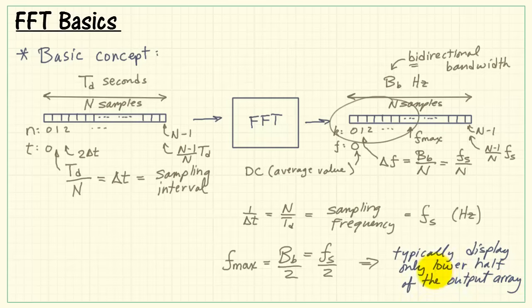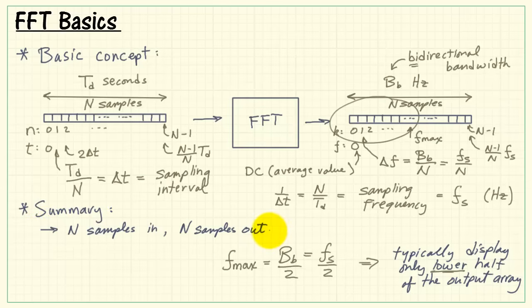All right, let's summarize some of the main points. First, we have n samples going in and we have n samples going out. We have a relationship between our sampling interval and the sampling frequency.